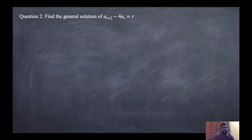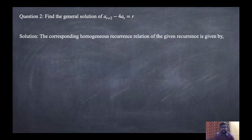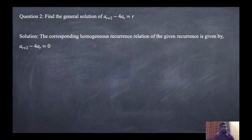Second example: find the general solution of AR+2 minus 4·AR equals R. Again this is a non-homogeneous equation. The corresponding homogeneous recurrence relation is AR+2 minus 4·AR equals 0.